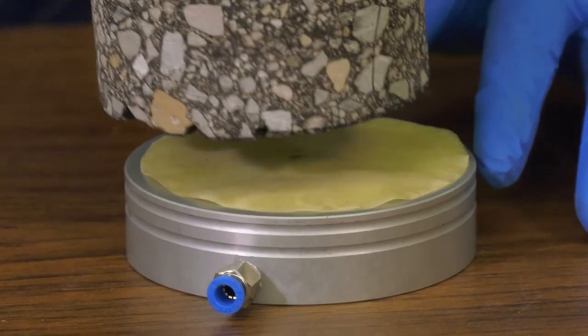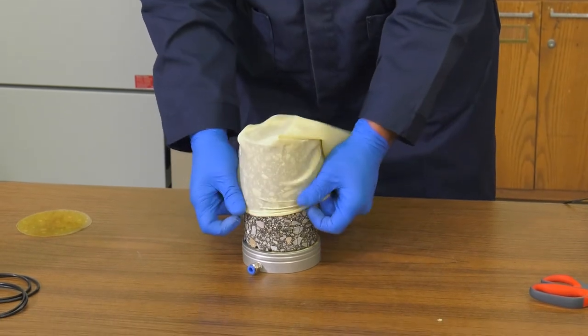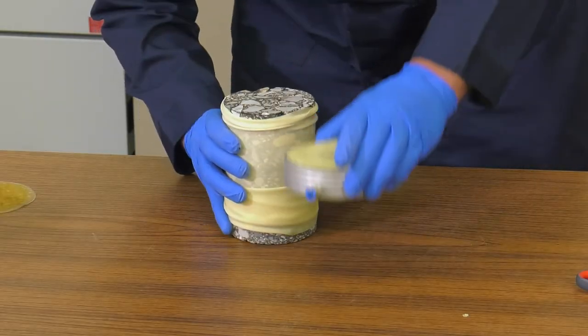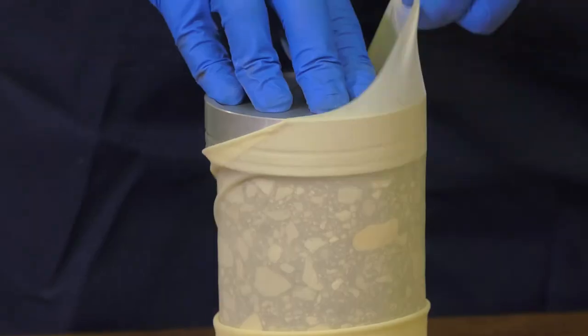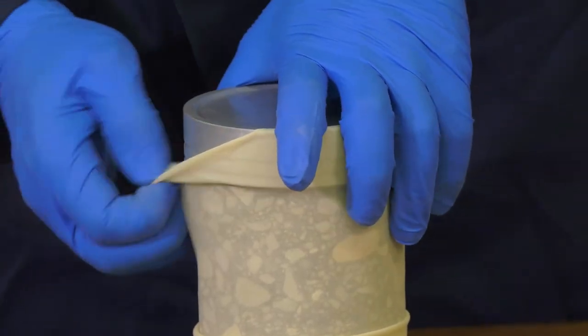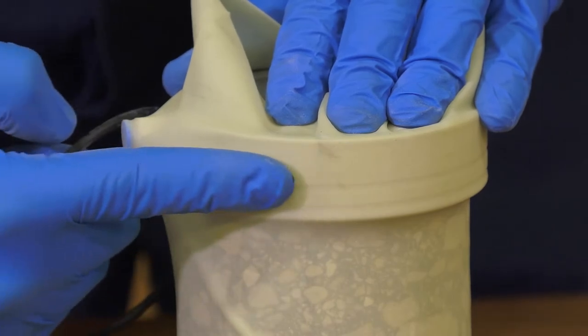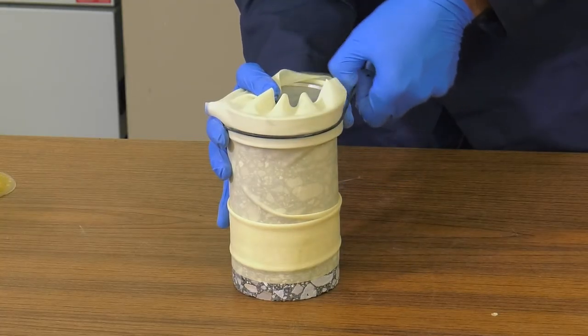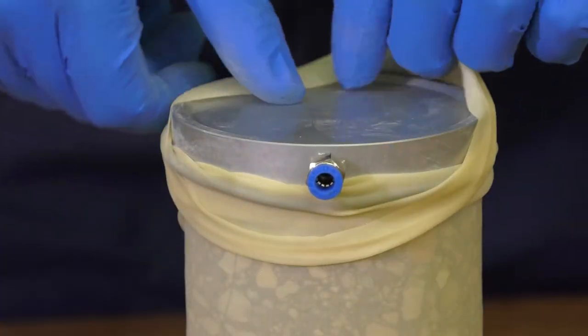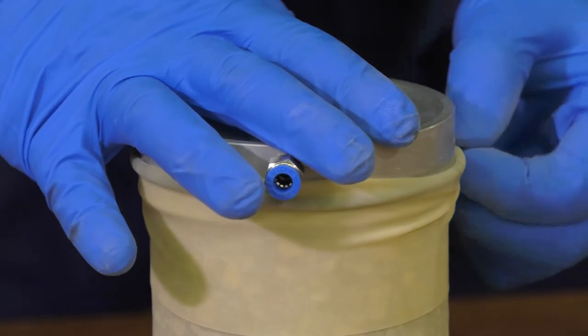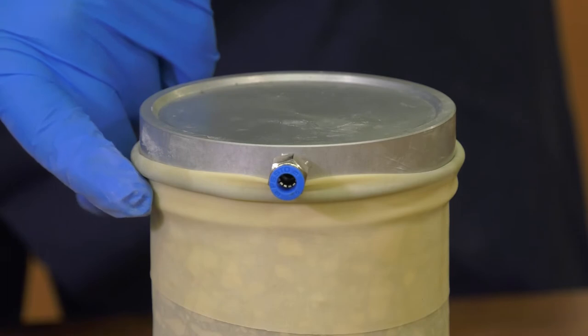Place the specimen on the lower platen and cover with the membrane. Stretch the membrane around the base. Secure one O-ring around the top groove of the platen. Next, flip the membrane down evenly to reveal the platen and straighten. Secure another O-ring on the second groove.